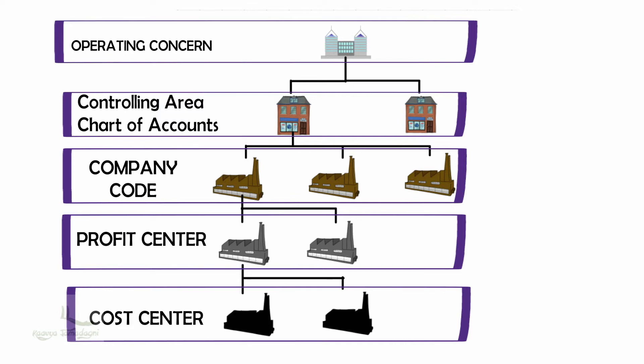This diagram shows the Enterprise Structure with both SAP FI and SAP CO modules combined. We will look into this in detail in future videos, but for now let's look at the overview. At the top we have the operating concern, which is the main organizational unit of the profitability analysis module, also known as COPA. COPA acts as a management tool to analyze specific markets and business segments.